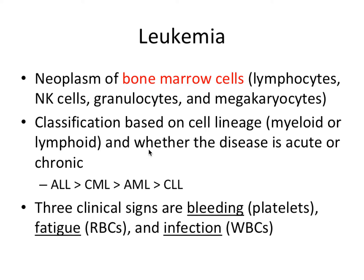The classification of leukemia is based on two things: cell lineage — whether it's a myeloid or lymphoid blood stem cell, the two branching points of the hematopoietic stem cell — and whether the disease is acute or chronic. The four types are ALL (acute lymphoid/lymphocytic leukemia), CML (chronic myelogenous leukemia), AML (acute myelogenous leukemia), and CLL (chronic lymphocytic leukemia).